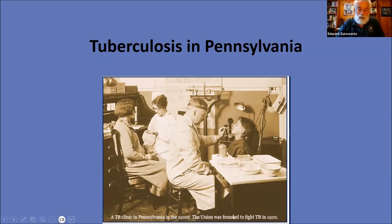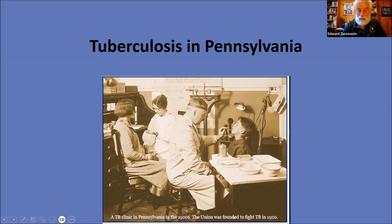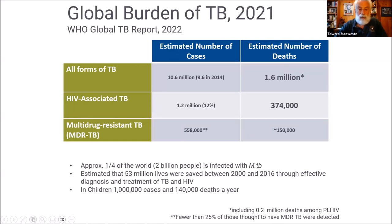This is what a TB clinician looked like in Pennsylvania in the 1920s. I doubt any of us look like that now in our TB clinics. The only thing that is the same as the 1920s is that we're still doing TSTs — tuberculin skin tests, which were actually begun in 1907. Everything else has changed, including look at that cell phone right by that kid's head.